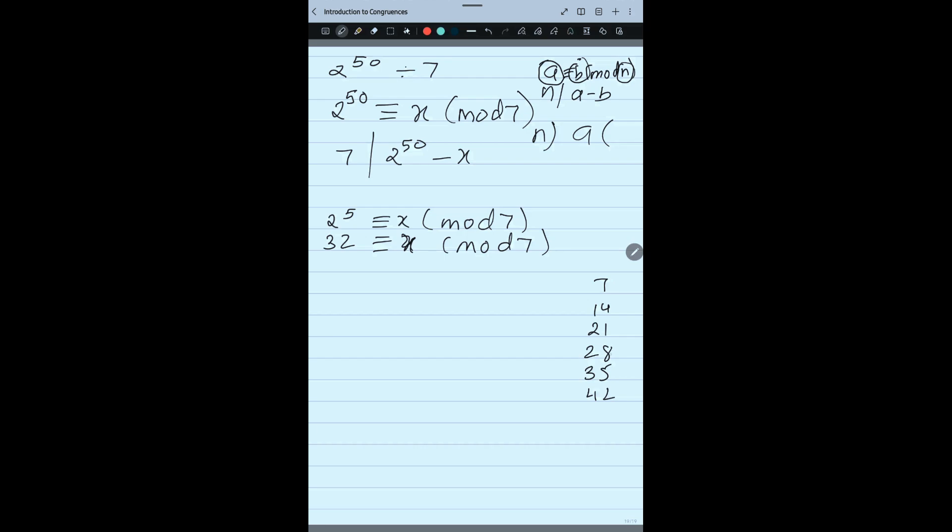So how far I am from 28? 28, 29, 30, 31, 32 - 4 steps. I am away from 28. So I will write 4. Now tell me, is this working now? 32 minus 4 is 28, divisible by 7. So I am done. So I can write that 2 to the power 5 is congruent 4 modulo 7.